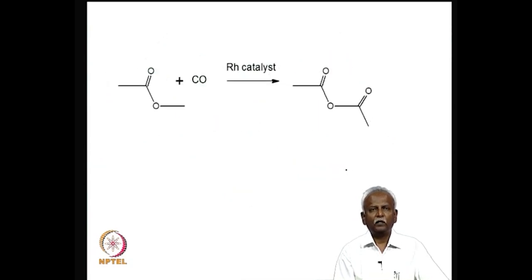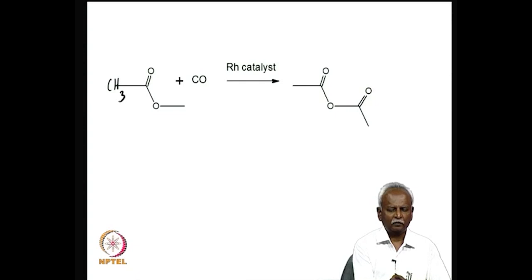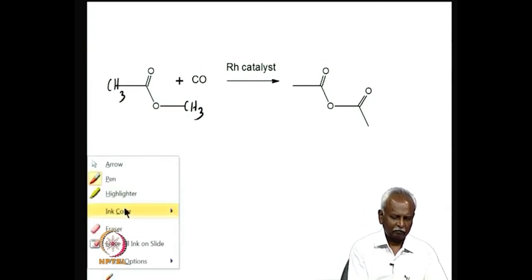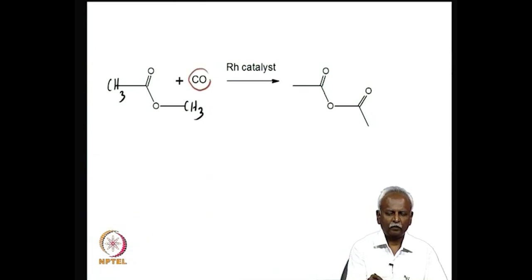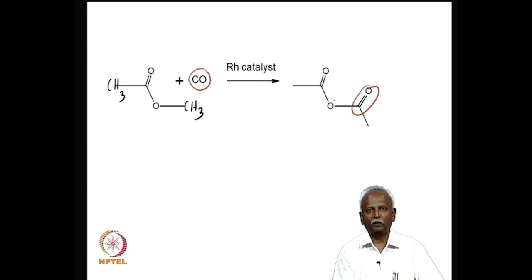One last example of an insertion reaction: methyl acetate reacts with carbon monoxide to form acetic anhydride — just one CO molecule inserted into methyl acetate. This again sounds like magic: the same methyl acetate molecule with one CO added in between becomes acetic anhydride. This is the best way of making acetic anhydride starting with a rhodium catalyst, and no organic catalyst will bring about this transformation — the chemistry is completely unique to organotransition metal chemistry.